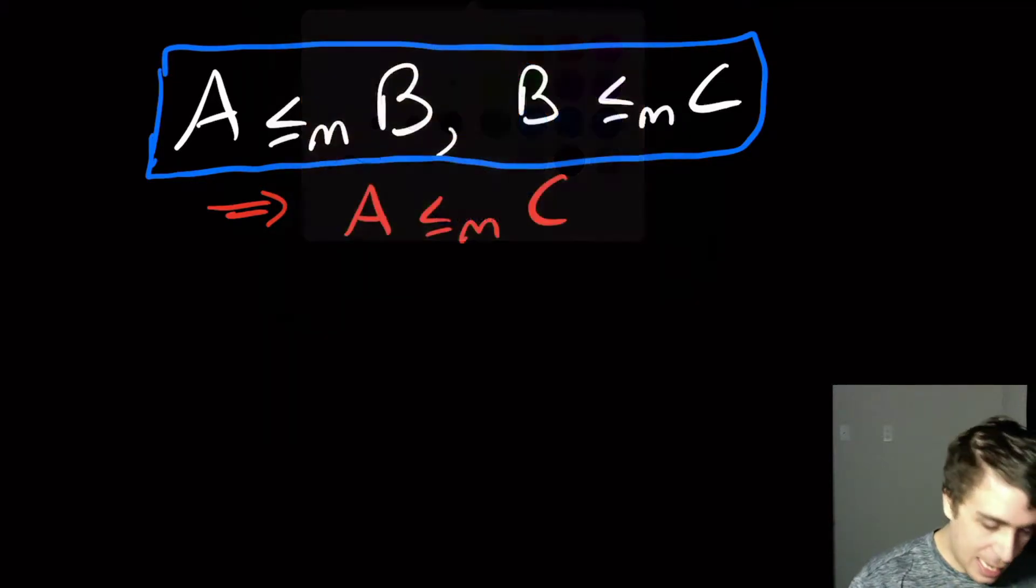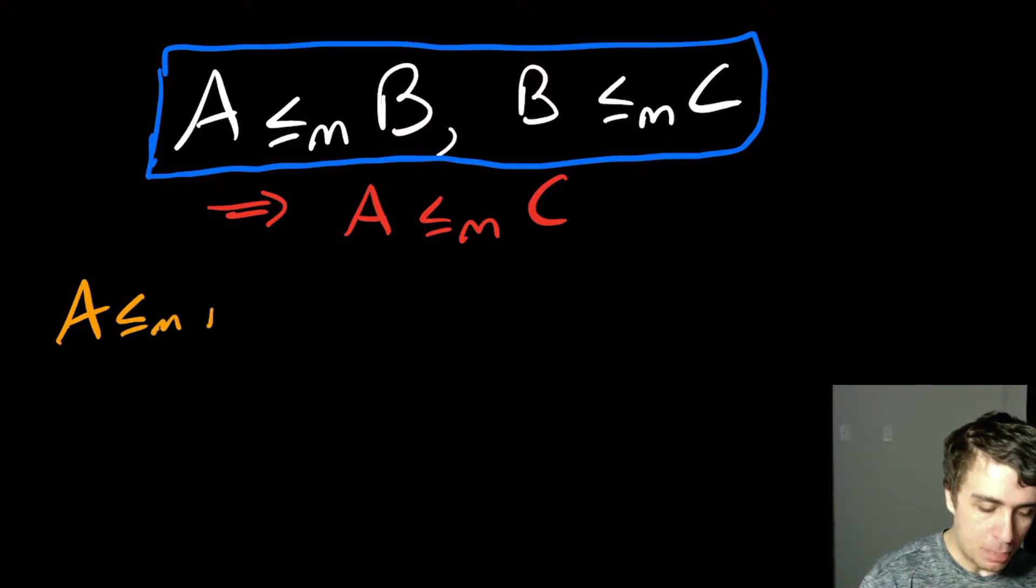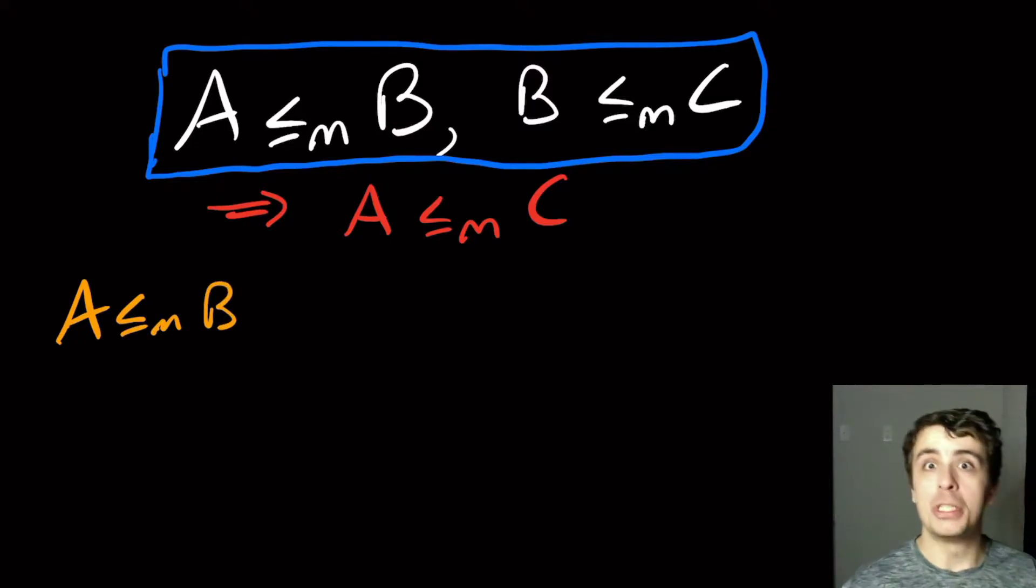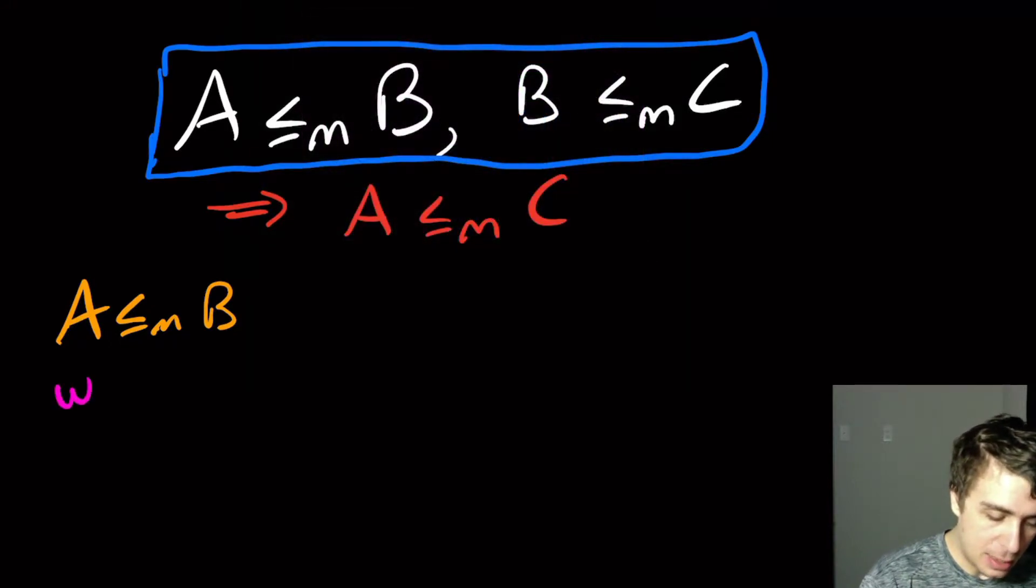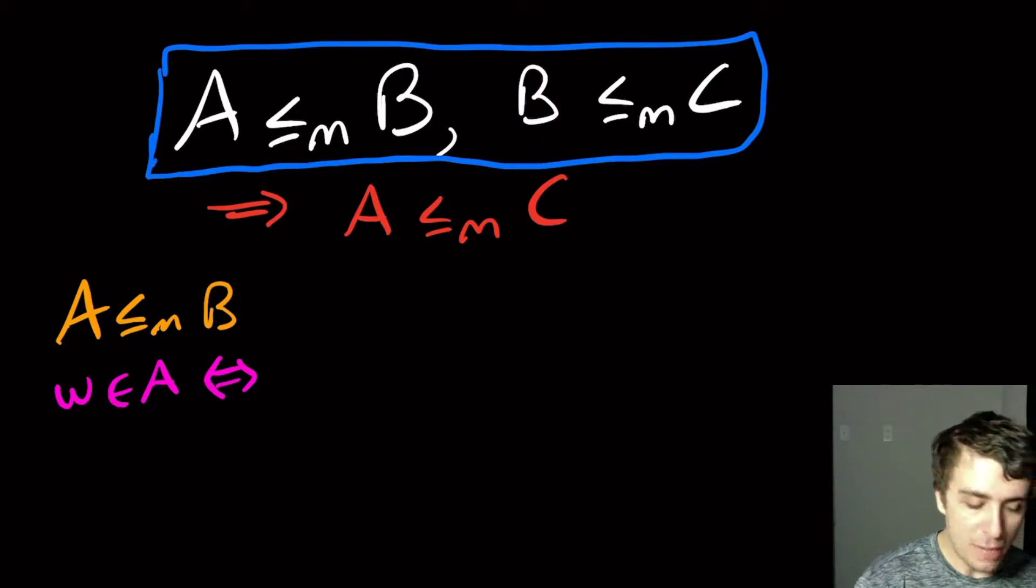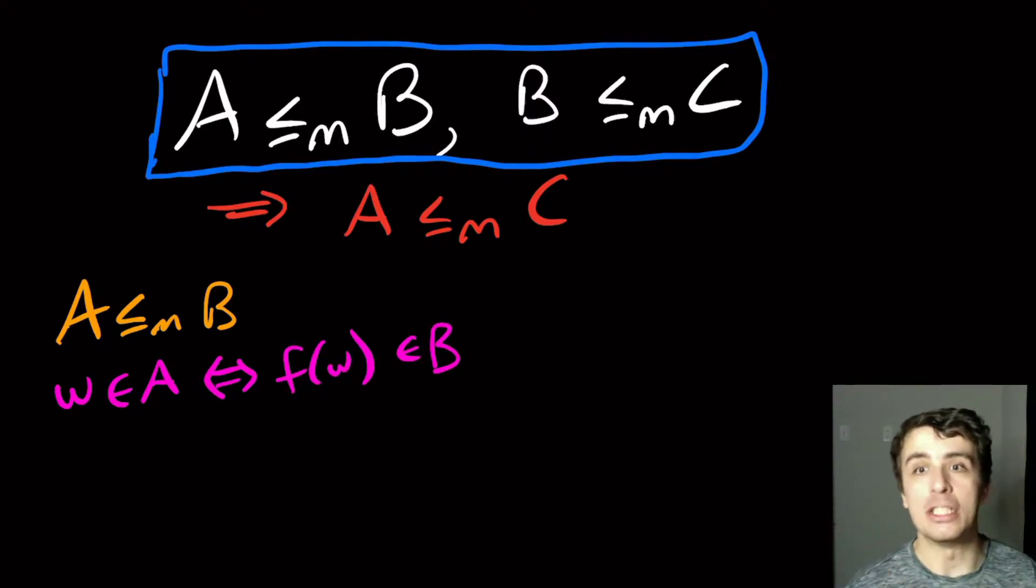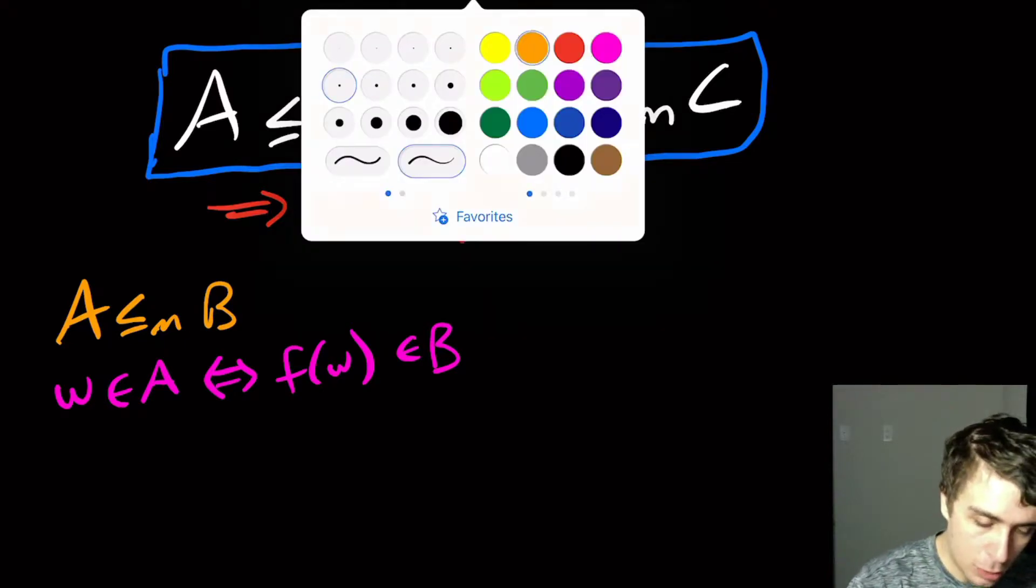So what does A mapping reduces to B mean? That means that there's some function F such that if W is in A, then that's true if and only if F of W is in B. That's what it means to be mapping reducible.